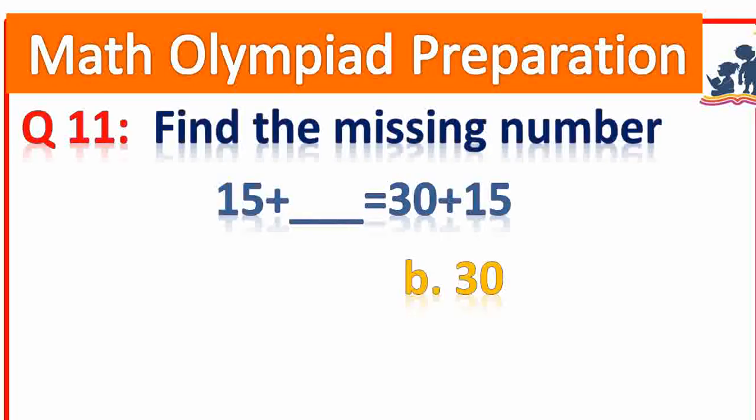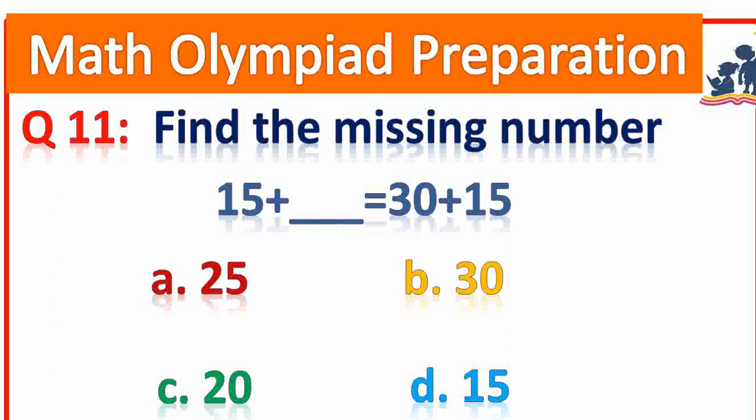Question number 11. Find the missing number: 15 plus dash is equal to 30 plus 15. Answer: 30. Very good.